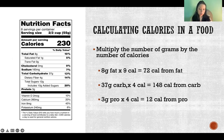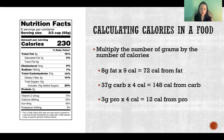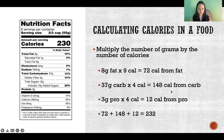Then for carbs and proteins, you multiply by four calories, because we get four calories per gram of carb and four calories per gram of protein. So we just multiply the number of grams times the number of calories per gram for each respective nutrient, and then we get the total calories from each of those nutrients.